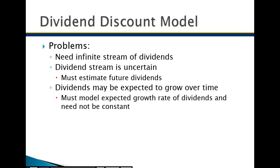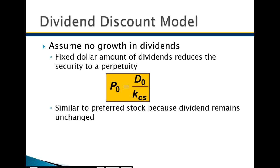The no-growth dividend formula applies to preferred stock. Preferred stock pays, say, a one-dollar dividend forever, every year. In this case the formula is extremely simple because there's no change in the dividend — simply dividing the dividend by K, the cost of common stock expressed as a percentage of required return, gives us the price of the stock. Very simple, used primarily only for preferred stock.